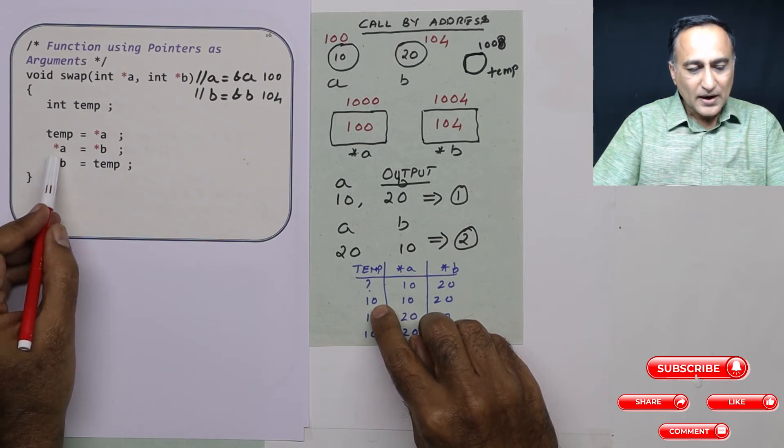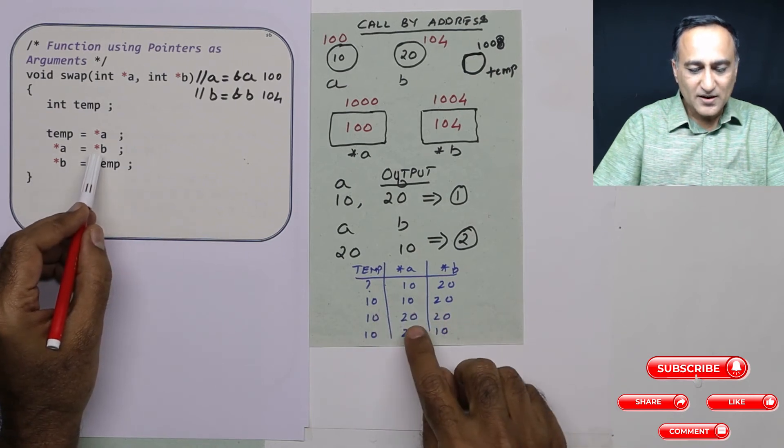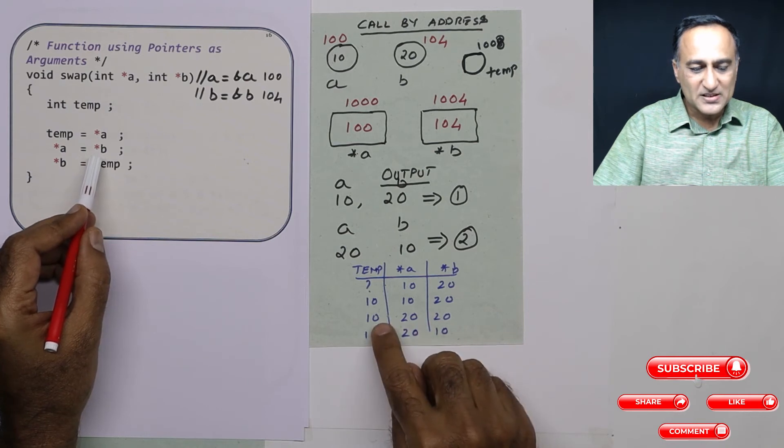Then the content at a gets replaced with the content of b. That is why if you see here, a has become 20, b is also 20, temp is 10.